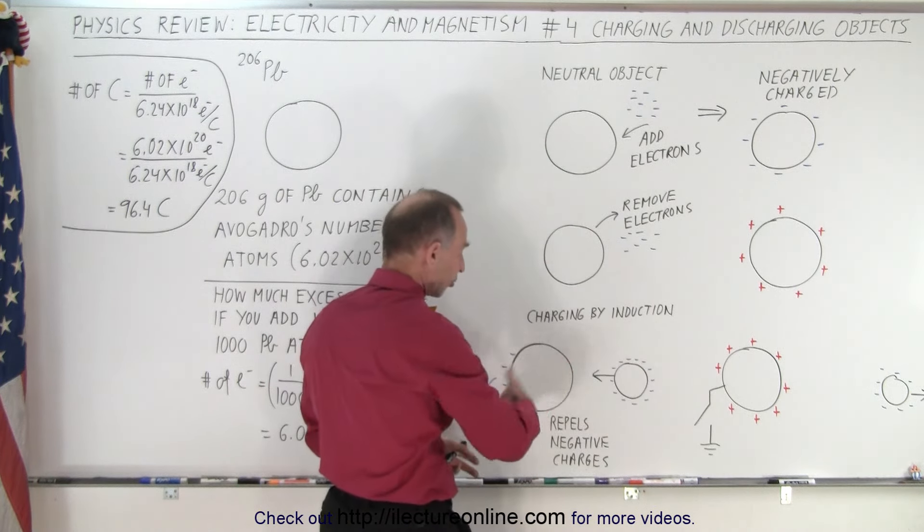So you have an object like that that becomes negatively charged. But if you have a neutral object and somehow you're able to remove electrons, then the object will become positively charged, and again those charges will distribute themselves equally around the surface of the object because they want to be as far away from each other as possible.